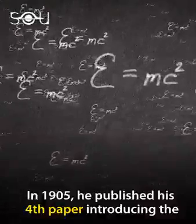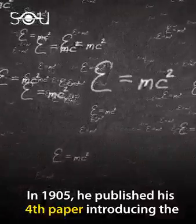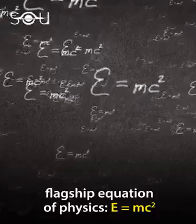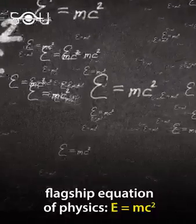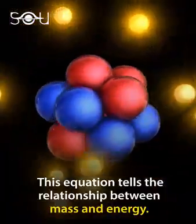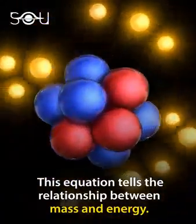In 1905, he published his fourth paper introducing the flagship equation of physics, E equals mc squared. This equation tells the relationship between mass and energy.